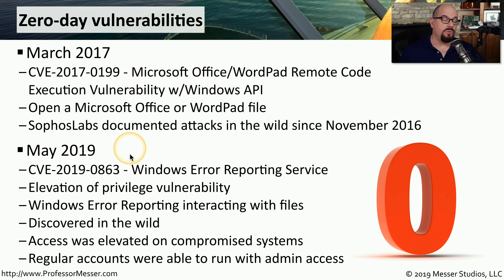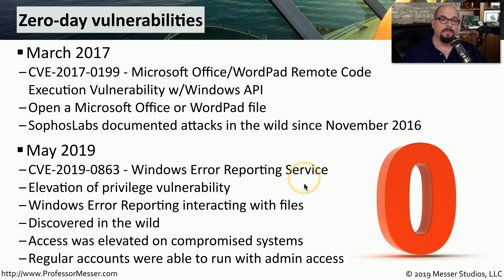This vulnerability was announced in May of 2019, but it exists within Windows 10, Windows 8.1, Windows 7, and even some versions of Windows Server. Windows 7 has been out since July of 2009, which means from the date that Windows 7 was introduced, this vulnerability was hidden inside of the operating system — at least 10 years — but only recently has someone been seen taking advantage of this vulnerability in the wild.